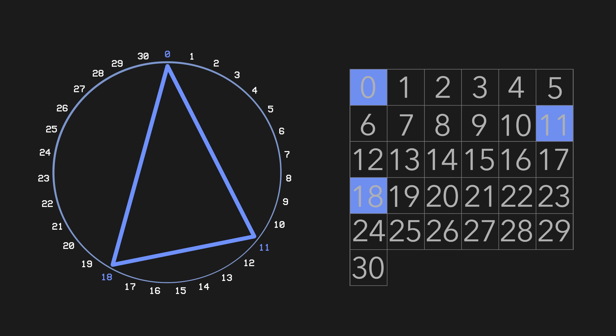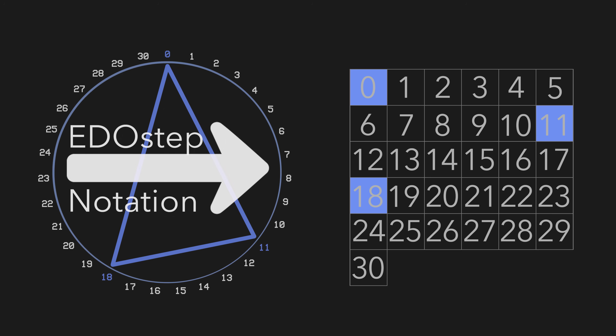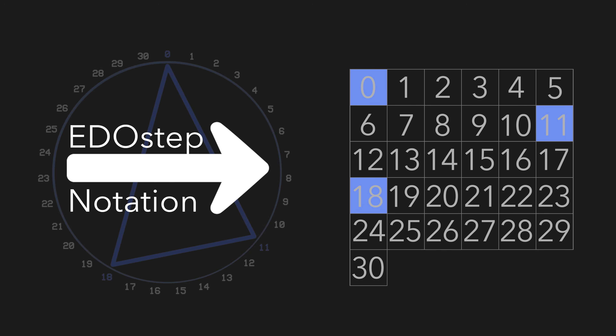So in practical terms out in the real world, they're pretty much interchangeable. EDO step notation is a simple way to identify and communicate different steps or microtonal intervals. The system is fairly straightforward — let's apply it to 31.